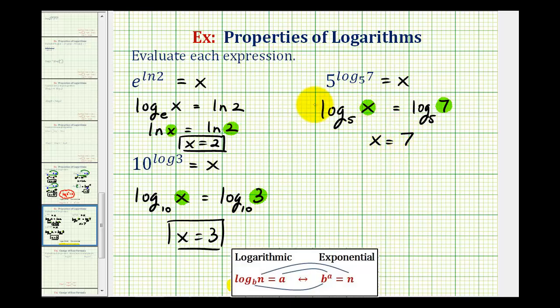Notice in each of these three cases, these expressions simplify to just the number part of the log in the exponent. Five raised to the power of log base five of seven simplified to seven. Ten raised to the power of common log three simplified to three.